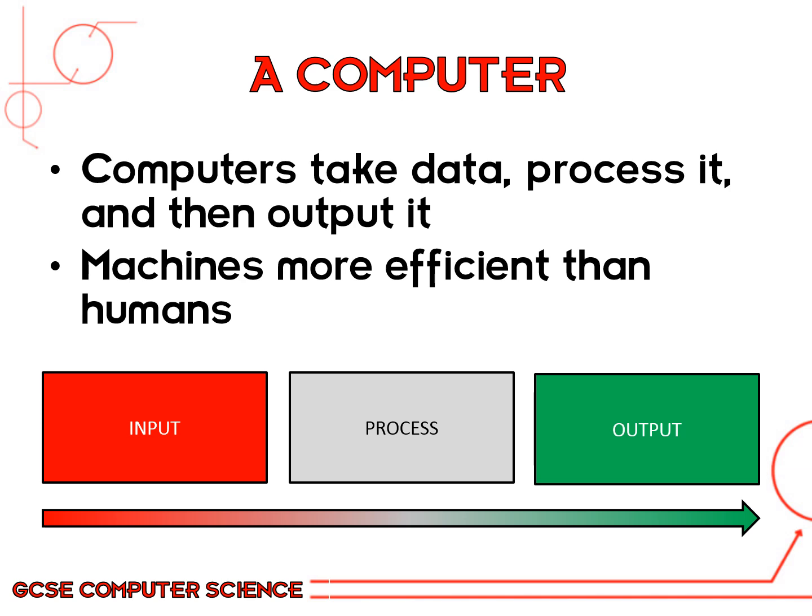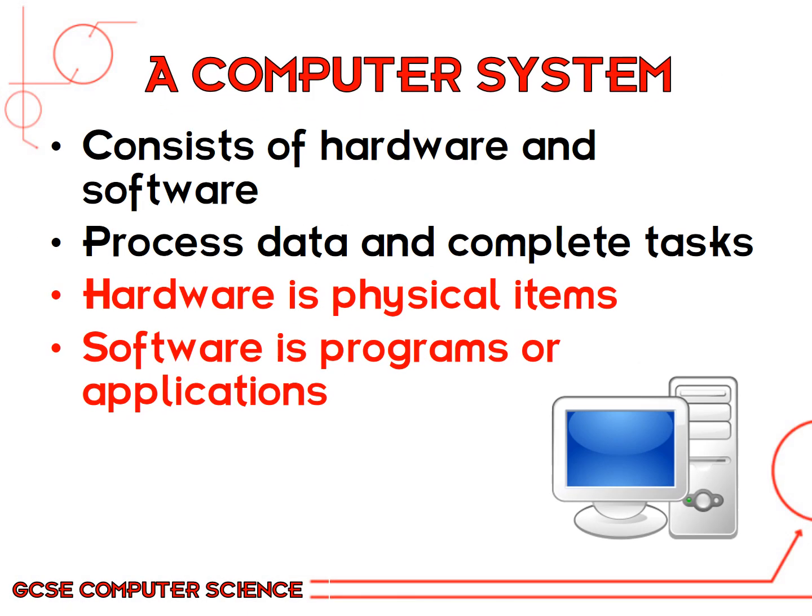A computer takes data, processes it and then outputs it. This means that a machine is often more efficient than a human. As you can see on the diagram here, data is input, processed and then output. A computer system consists of hardware and software — hardware being the devices, the physical items that you can touch, and software being programs or applications that run on the hardware.